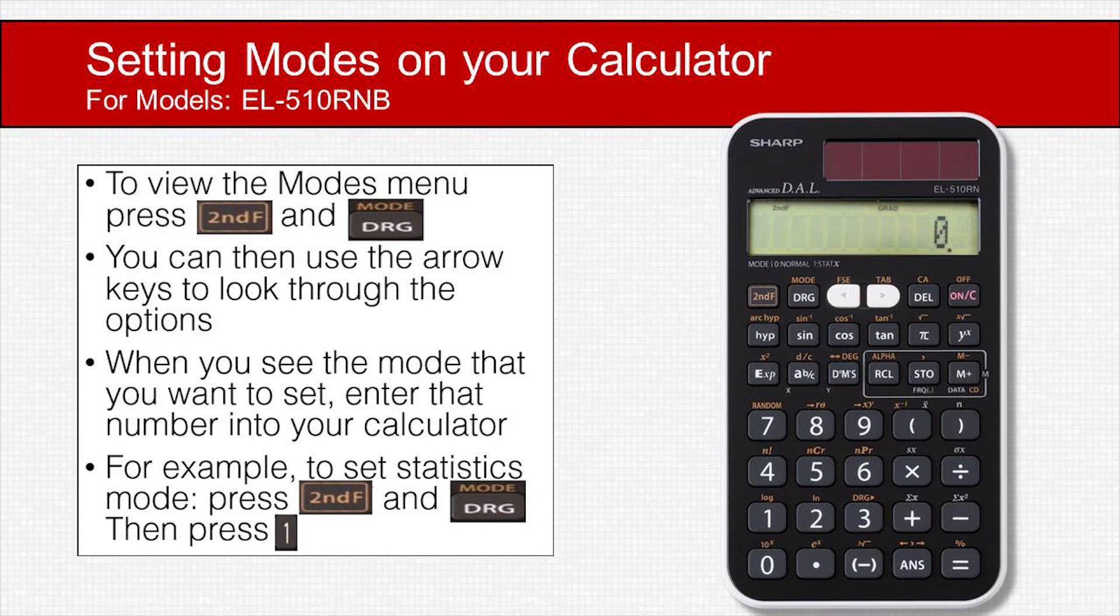Modes on the EL-510RNB can be found in the modes menu. To view the modes menu, press second function and DRG. You can look through the mode options by using the left and right arrow keys. When you see the mode that you want, enter the number for that mode into your calculator. For example, to set statistics mode, press MODE and then 1.